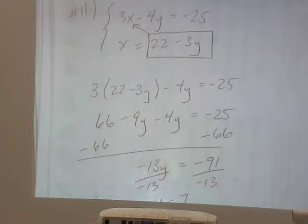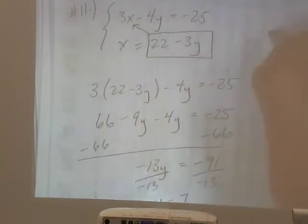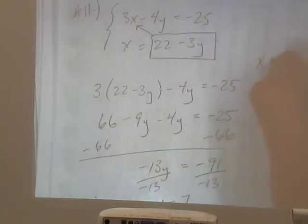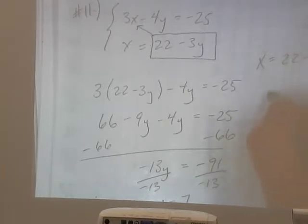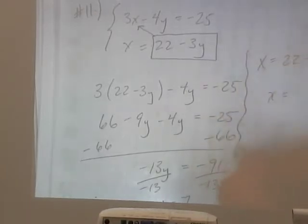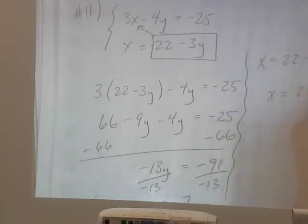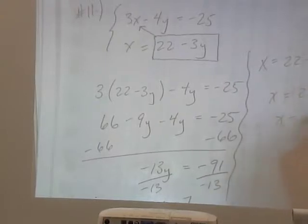And unfortunately, they don't want y. They want x. So we'll plug that back up in. So we know that x is going to be equal to 22 minus 3 times 7. Or x is going to be equal to 22 minus 21. x is equal to 1.